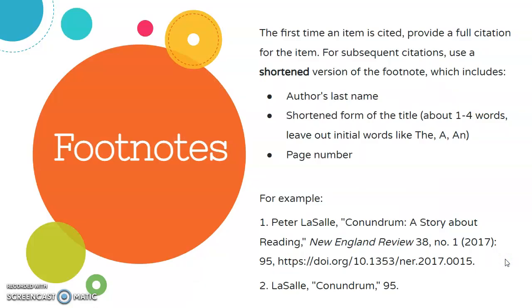Here are a couple things to keep in mind. The first time a source is cited, you will need to provide a full citation for the item — meaning first name, last name, article title, journal name, etc.